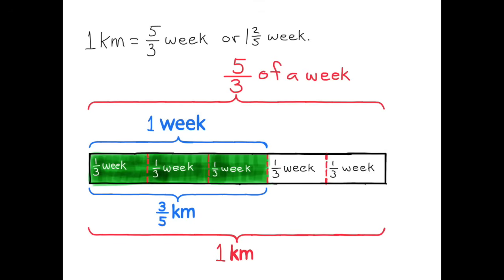Take a look at the diagram. The work that was completed in 1 week was 3 fifths of a kilometer, so I divided that week up into thirds. Shaded in green, you have 3 sections of 1 third of a week. It would take 2 more sections of 1 third of a week to complete 1 full kilometer. That's a total of 5 thirds of a week.